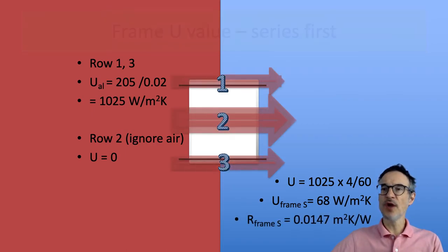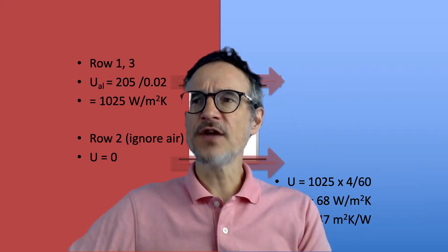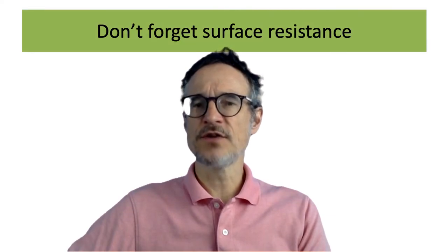These two numbers, the U value calculating this way and the U value calculating that way, there's a big difference between these two numbers. We don't have a very reliable idea of what the number is, but let's just put it somewhere between the two. The other thing as well is don't forget surface resistance.